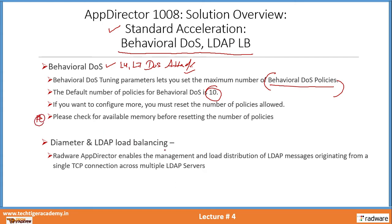Diameter and LDAP load balancing: Radware AppDirector enables the management and load distribution of LDAP-related messages. This is specific to authentication originating from a single TCP connection across multiple LDAP servers. This is all a function of standard acceleration.